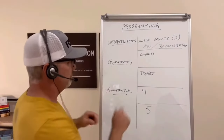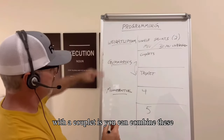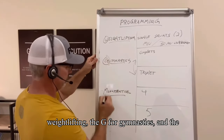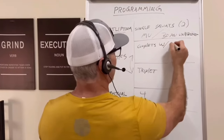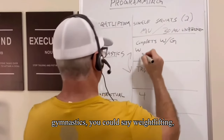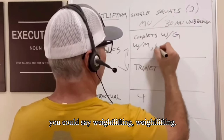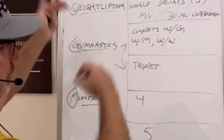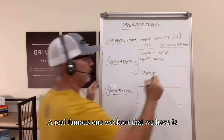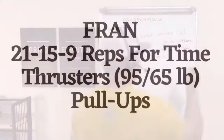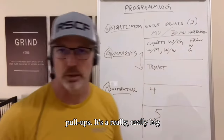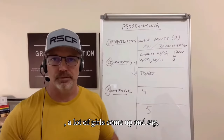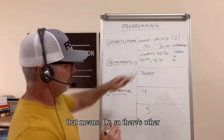Now let's get to a couplet. Couplets and triplets — this is where CrossFit lives; these are the two main ones. With a couplet, all you want to do is combine any of the categories. We're going to circle W for weightlifting, G for gymnastics, and M for monostructural. You can put any of these together: weightlifting-gymnastics, weightlifting-monostructural, or even weightlifting-weightlifting. A really famous one is called FRAN — it's a weightlifting movement and a gymnastic: thrusters and pull-ups. It's a really big staple in CrossFit.